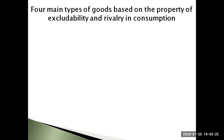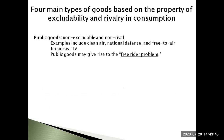A perfectly non-rival good can be consumed simultaneously by any unlimited number of consumers. The combination of the two attributes — excludability and rivalry — creates four subcategories of goods: public goods, private goods, common resources, and club goods or natural monopolies.